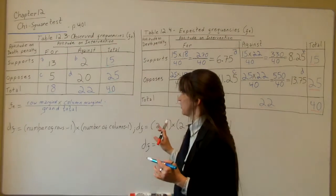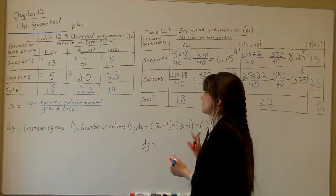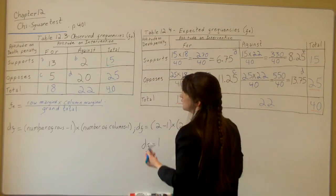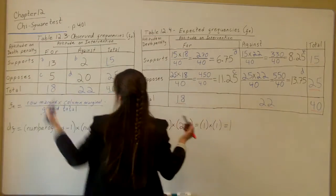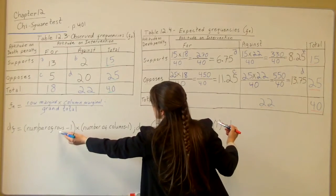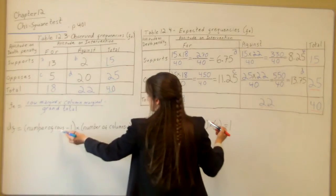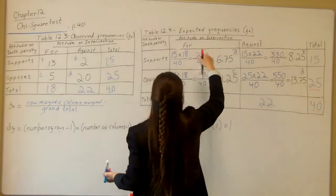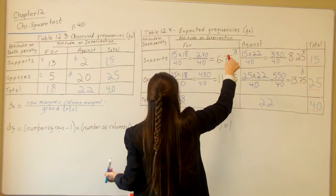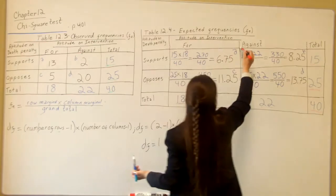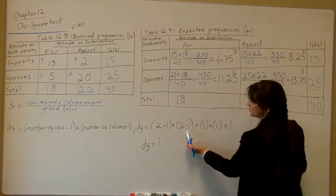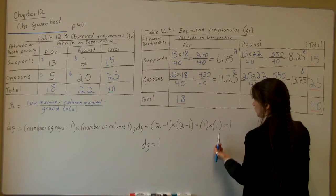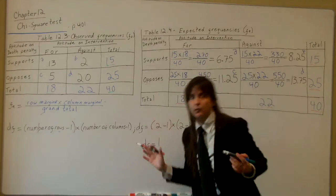Now we're also going to explain here how to calculate your degrees of freedom. That's your number of rows, which as you notice our number of rows, we have supports and opposes. Of course, they're the same for both, supports and opposes. So we have 2 for our number of rows, right here, minus 1, times the number of columns. Your columns are like columns on buildings or running north to south. So your number of columns, you have for and against. So that's a total of 2, 2 minus 1. So first we go 2 minus 1 equals 1, 2 minus 1 equals 1, 1 times 1 equals 1. So your degrees of freedom or your wiggle room equals 1.